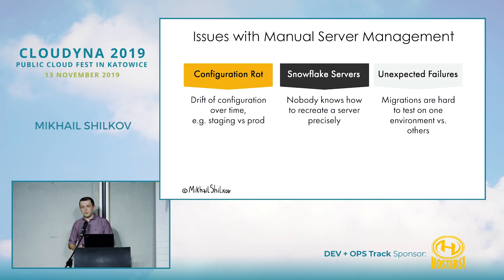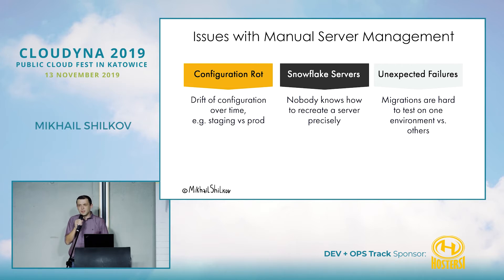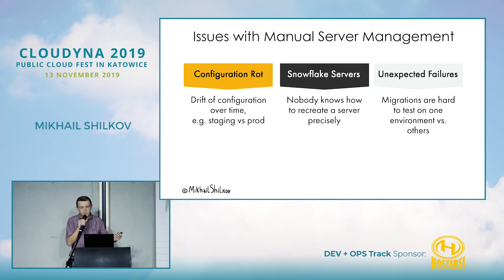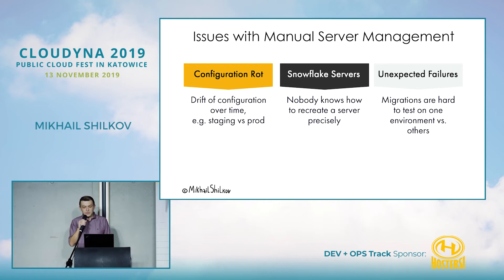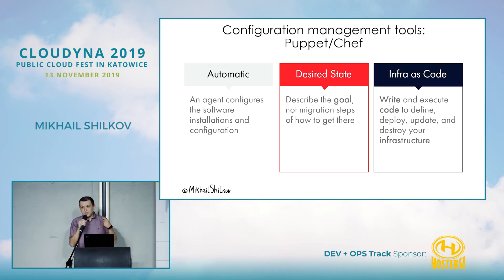Of course, there are problems with manual labor. Servers exist for years and drift in tricky ways. You can't really wipe them or install new ones because you're too afraid — nobody remembers the full history. So many years ago, before the cloud, smart people invented the concept of infrastructure as code.